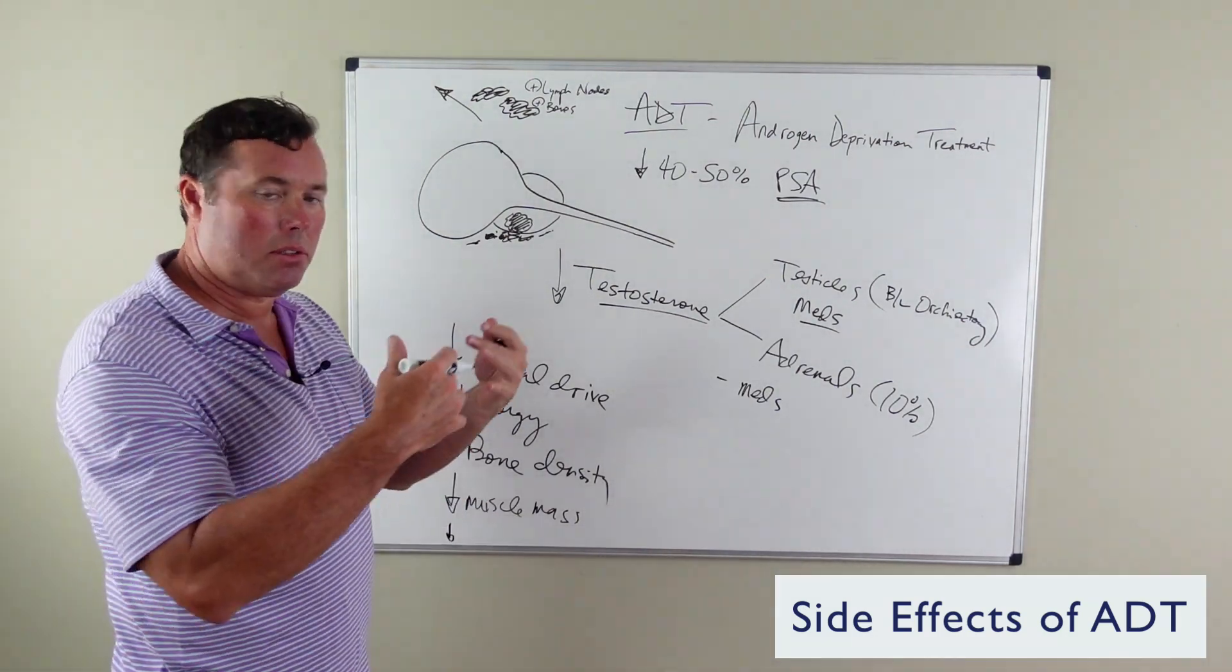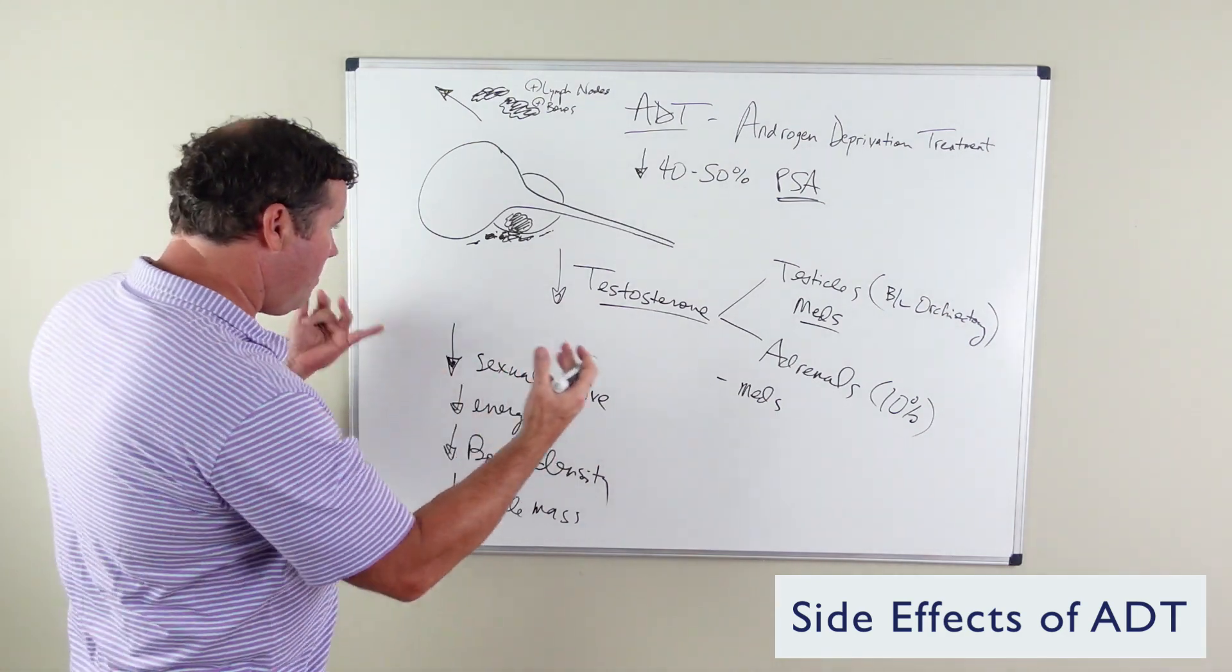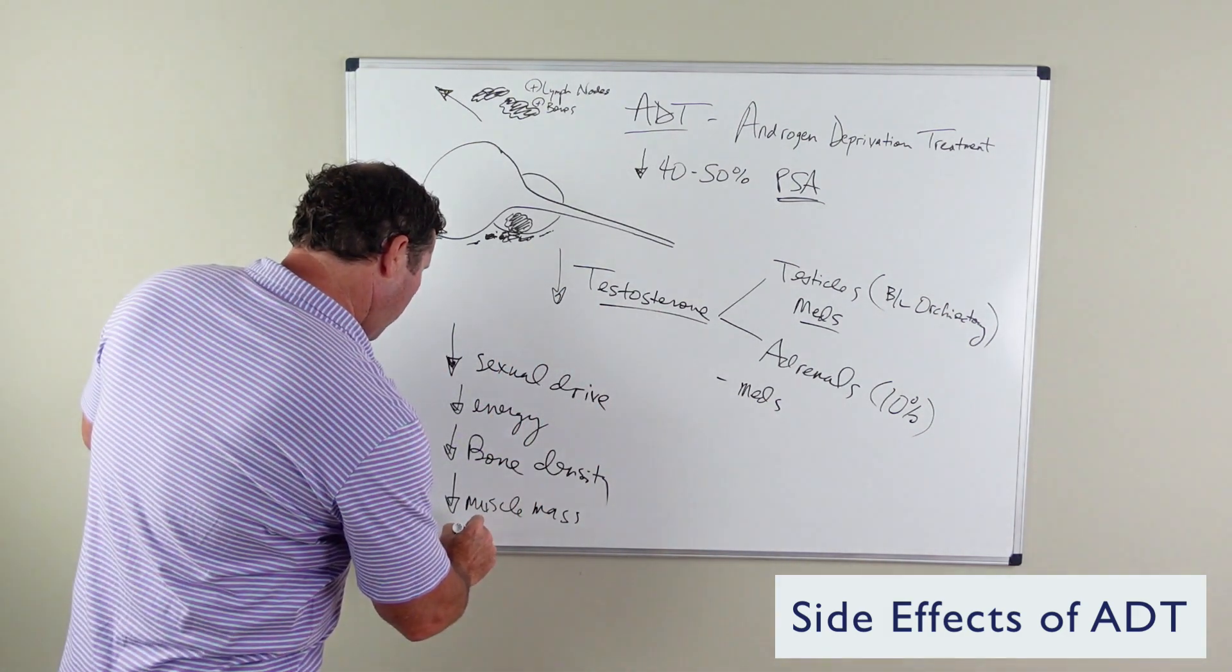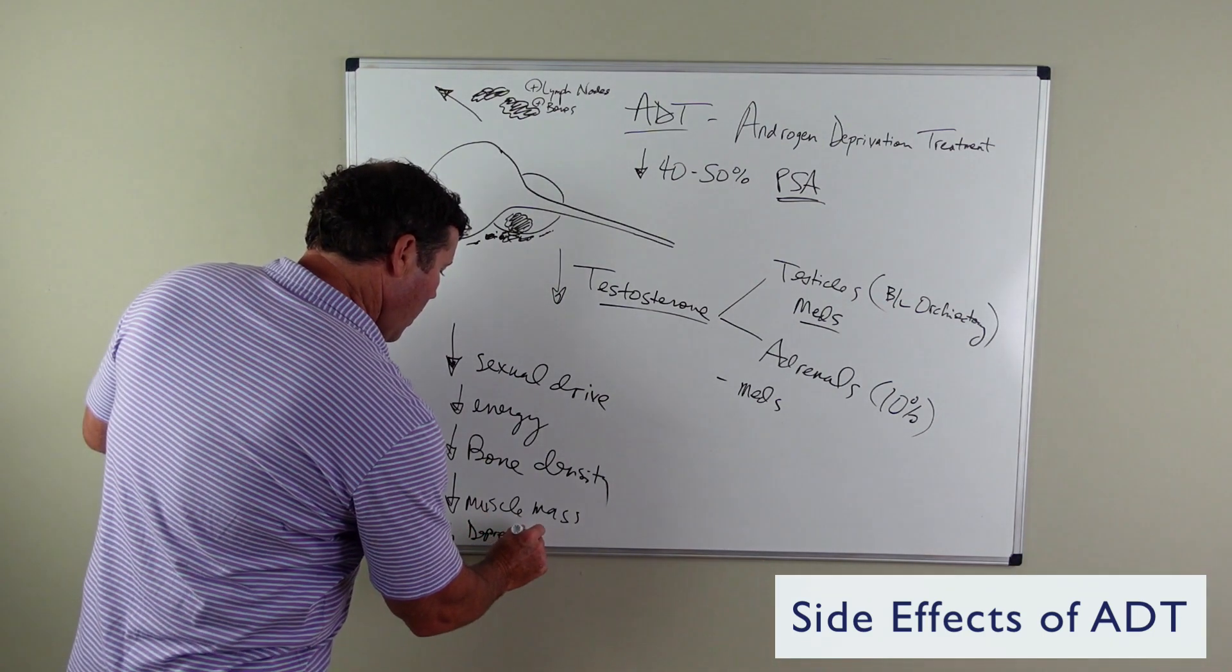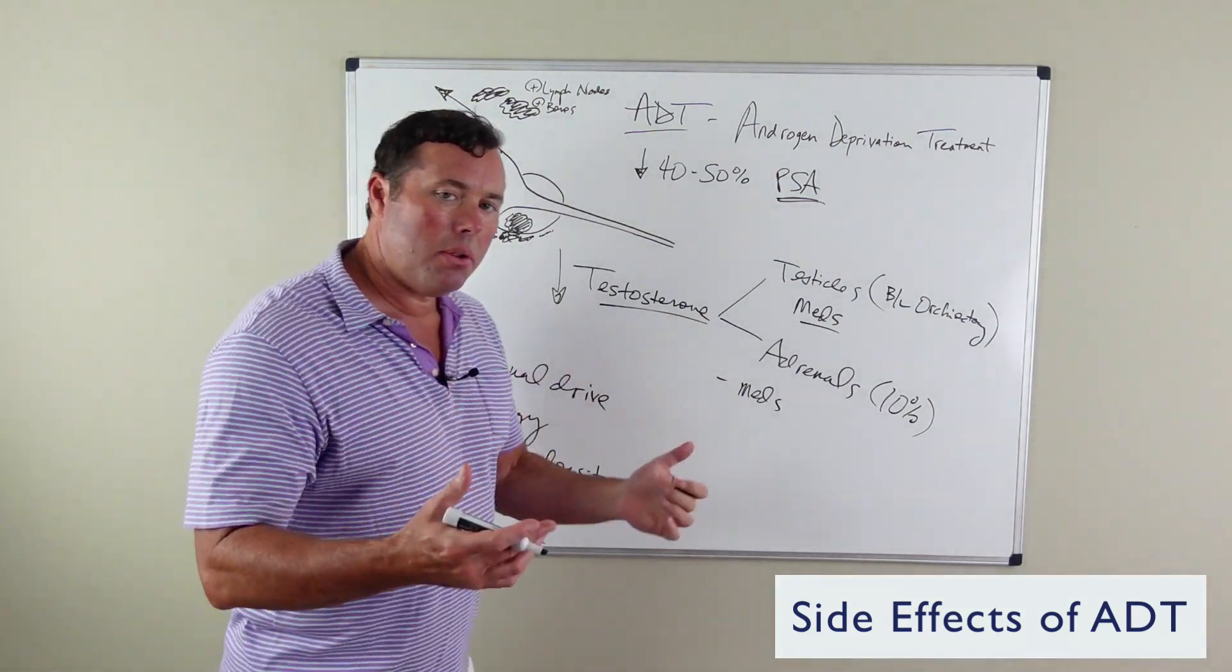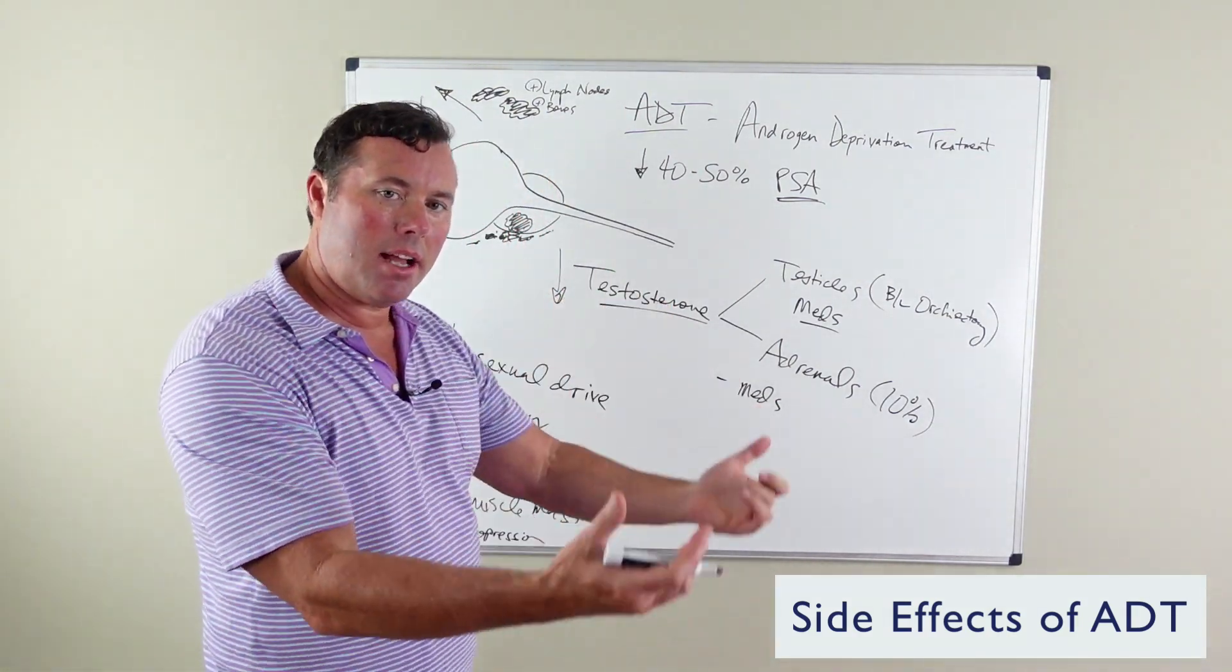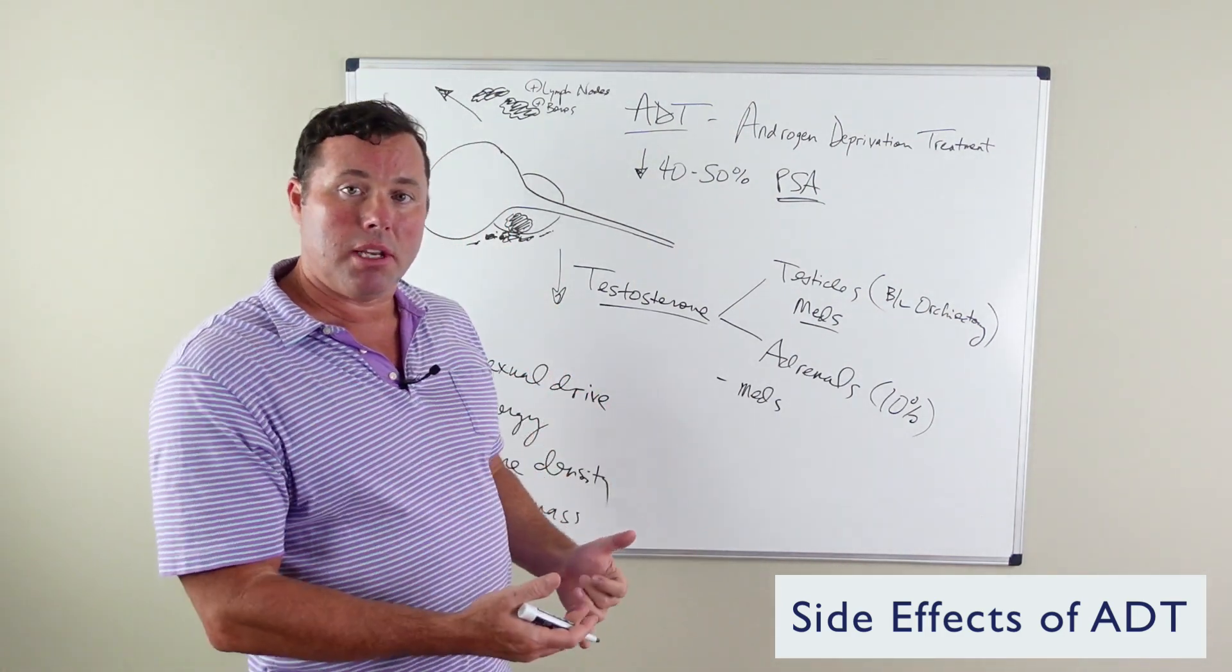Many men will notice depression or anxiety that can be brought on by this low testosterone. Depression can be something that is found. And one of the newer things we're finding out is that there may be some type of protective effect to the heart in men with a normal testosterone.